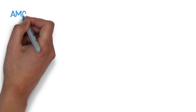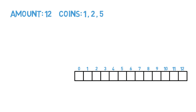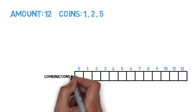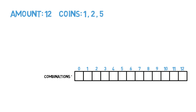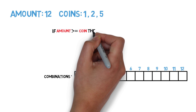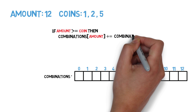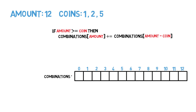Given the amount 12 and the coins 1, 2, and 5, the first thing we're going to do is create a one-dimensional array the size of amount plus one. We call this array 'combinations'. The values stored in the array will be the total count of combinations for the different amounts, and each location in the array will correlate to an amount of money. We're going to iterate through this entire array for each coin. The logic: if the amount is greater than or equal to the coin value, then that location in the combinations array will equal its current value plus the value at location amount minus coin.